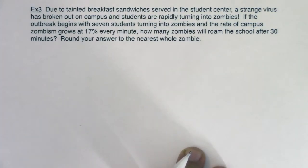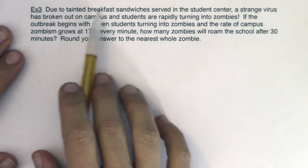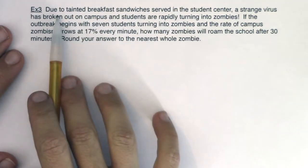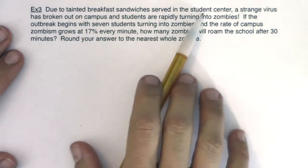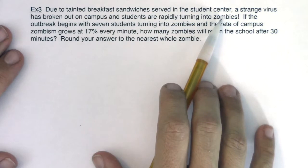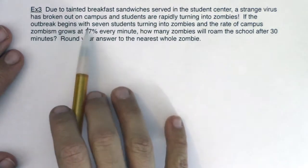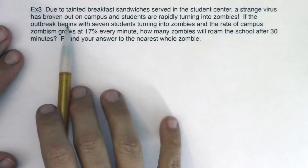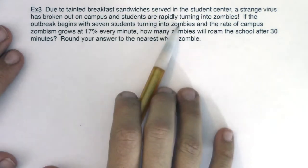Let's read through this, try and listen for the variables, there's two of them like always, see if you can listen for any ordered pairs. So due to tainted breakfast sandwiches served in the student center a strange virus has broken out on campus and students are rapidly turning into zombies.